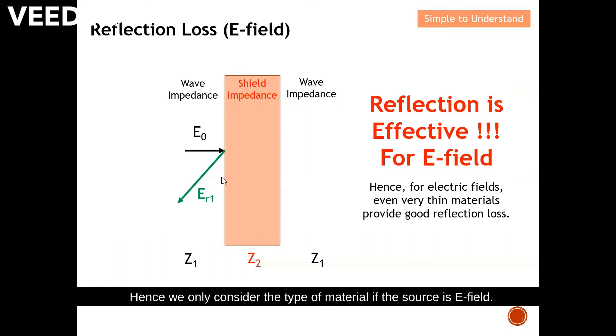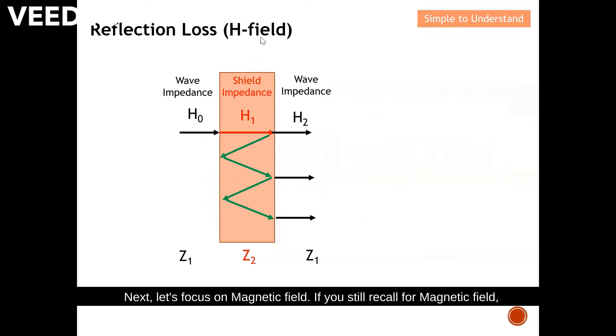This means we don't even need to consider the thickness of the shield, because reflection is very effective for E-field. Hence, we only consider the type of material when the source is an E-field.